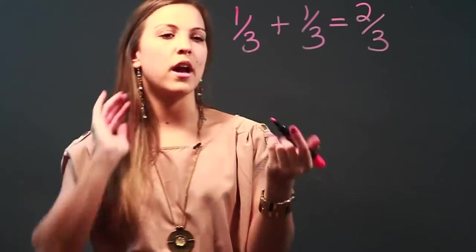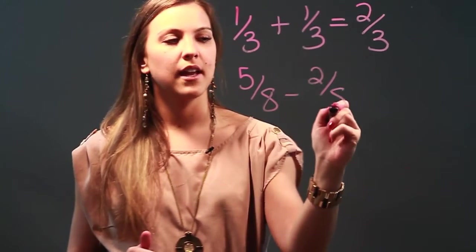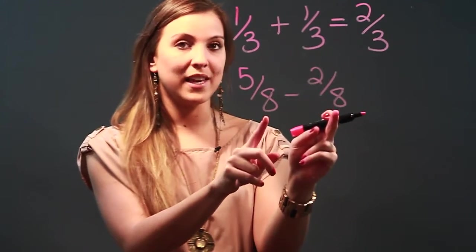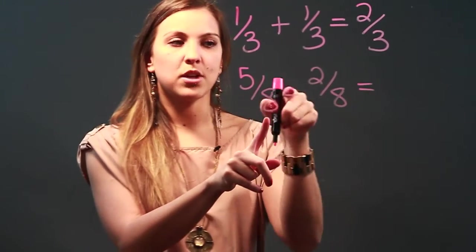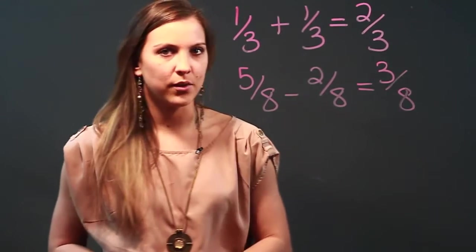And the same thing with subtraction. If I had 5 eighths minus 2 eighths, they have the same denominator which I told you they need. So all I do is subtract the numerators. 5 minus 2 is 3. Keep the denominator as 8 and that's my answer.